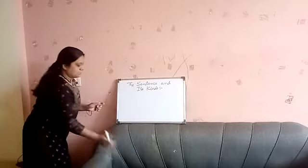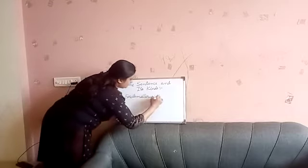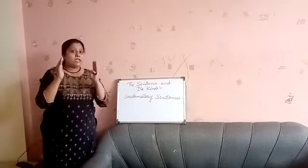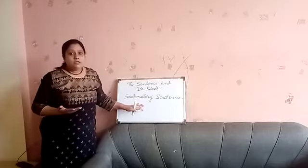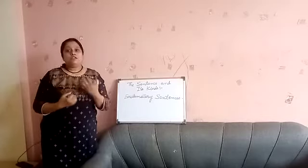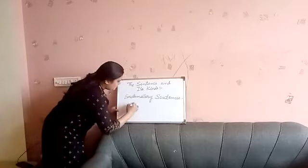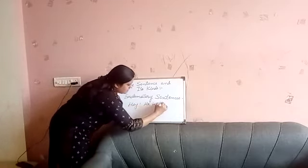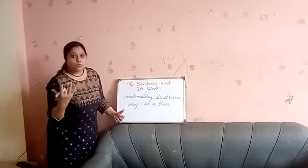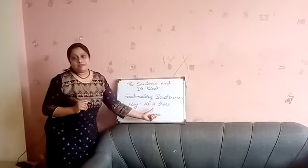The fourth kind of sentence is exclamatory sentences. As every word and terminology has its own meaning, exclamatory sentences are sentences that express sudden emotions like joy, sorrow, happiness, fear, or fright. For example, 'Hey! He is there.' Here 'Hey!' is an exclamatory word, and the exclamation mark is the sign of exclamation. These are exclamatory sentences.